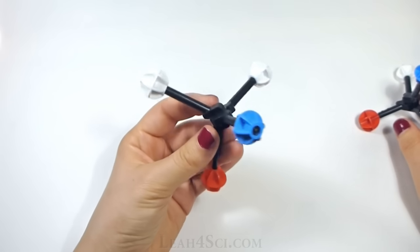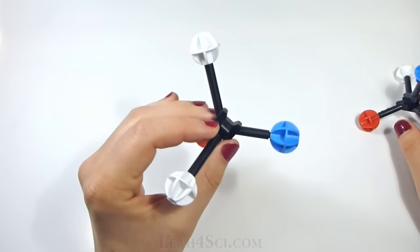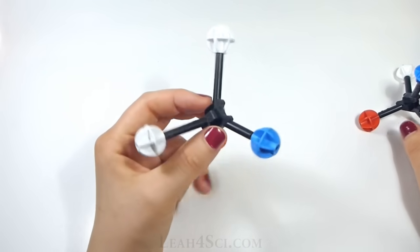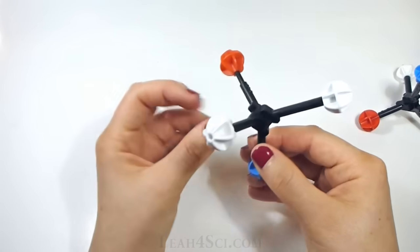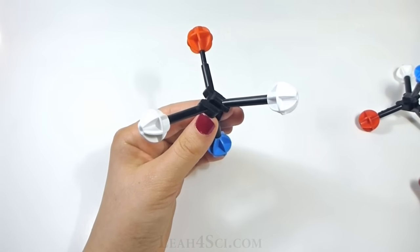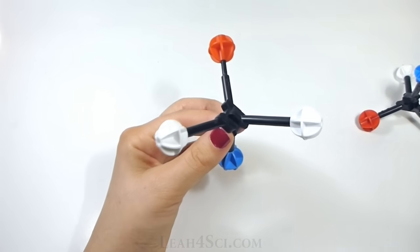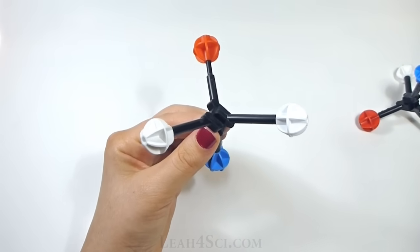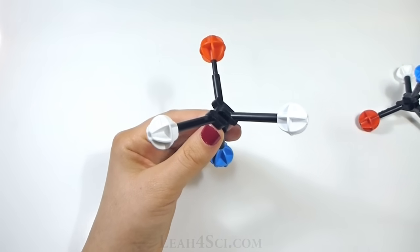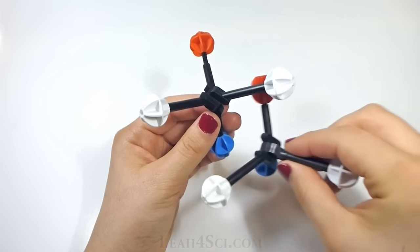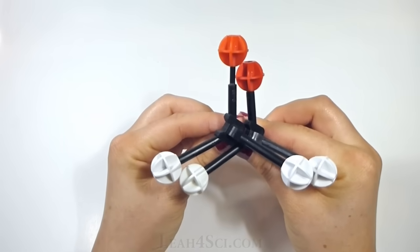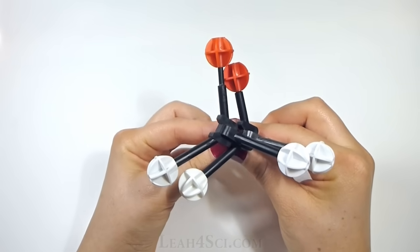Because this molecule has a tetrahedral, sp3 carbon in the center but two of the same substituent for a total of three unique, it's not chiral and if it's not chiral, it doesn't have a mirror image, it's going to be superimposable on another molecule of its kind. And just because it's superimposable doesn't make them enantiomers, it just makes them superimposable because they're the same exact thing.